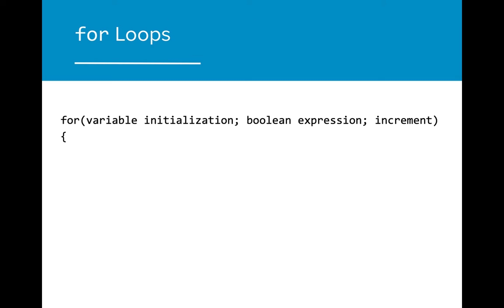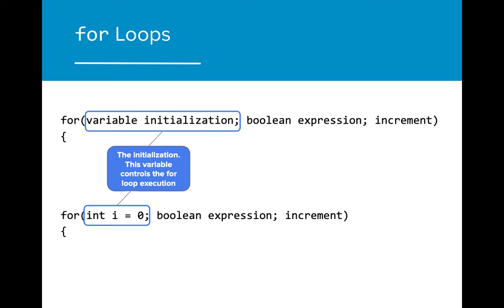Let's take a deeper look at the different components of the for loop header. The first component of the for loop is the initialization. In order to create a for loop, we need to create a variable that will be used to control the flow of the for loop. This variable is often referred to as the loop control variable. In this case, we initialize a variable i and set its value to zero.